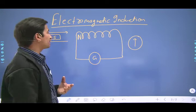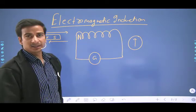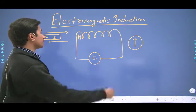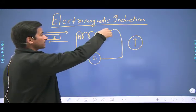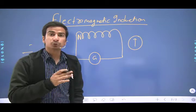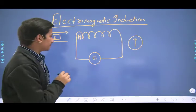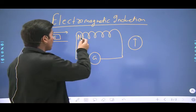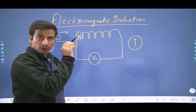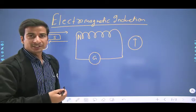Aise current jo lagataar apne direction ko change karti rehti hai, woh alternating current kehlati hai. From the last lecture, we already know what the clockwise or anticlockwise configurations correspond to — south pole and north pole. If you are getting a north pole at this end, you will get an anticlockwise direction of current; for the south pole, you will get a clockwise direction.